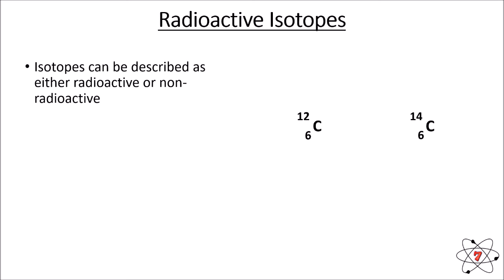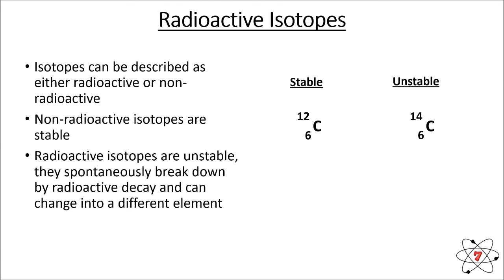We have two versions of carbon here. Carbon-12 is a stable isotope — it is not radioactive, it will not decay, it will not change, and it will remain stable indefinitely. The other isotope, carbon-14, is unstable. This means it will spontaneously and randomly break down by radioactive decay, and when it does it will change into a different atom — carbon-14 actually changes into nitrogen.